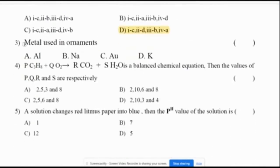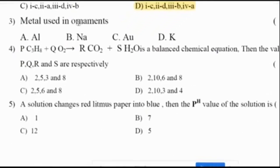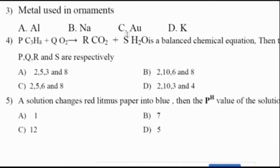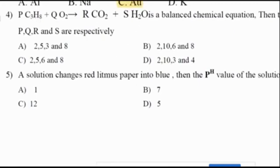Moving on to the third question: the metal used in ornaments is gold, symbol AU. Fourth question: C3H8 plus O2 gives CO2 plus H2O is a balanced chemical equation. The values of P, Q, R, and S are 2, 5, 3, and 8 respectively, so option A is the correct answer.